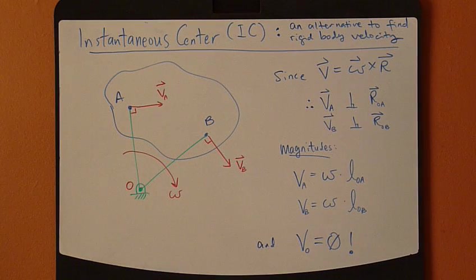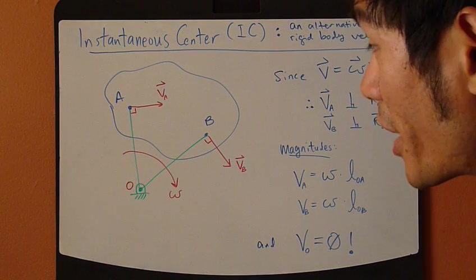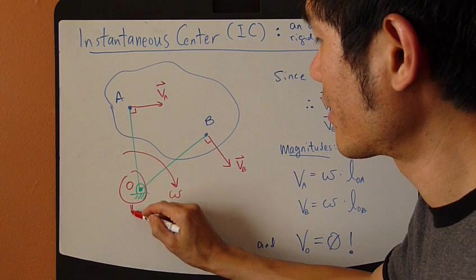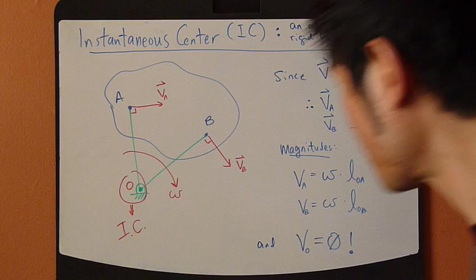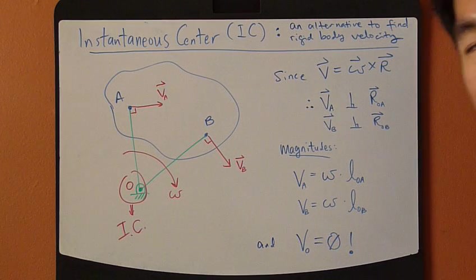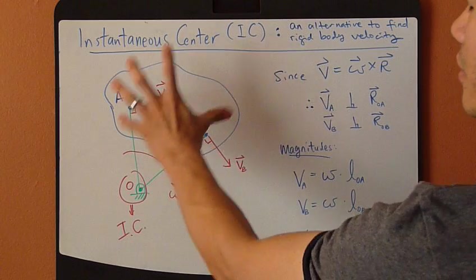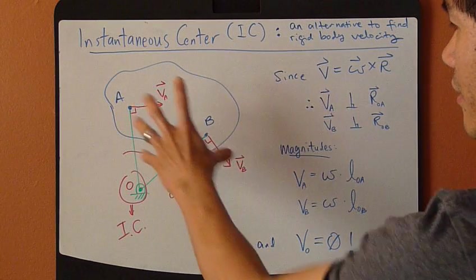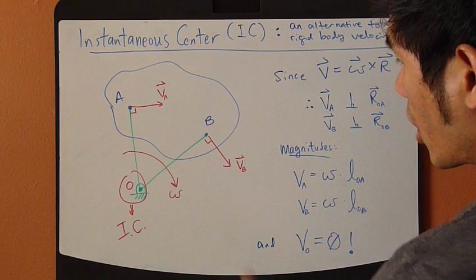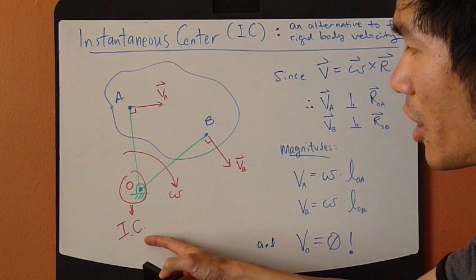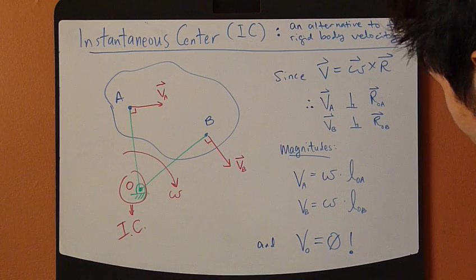So this point O has zero velocity, and it is this point O that is instantaneous center. And why it's called instantaneous center? Because at this very instant, this rigid body can be thought of as rotating about point O, that is instantaneous center, where the velocity of point O is zero.